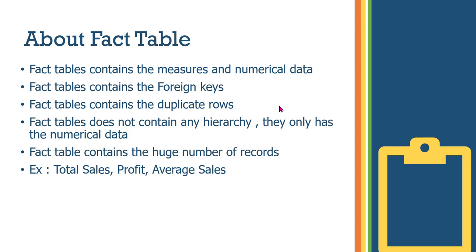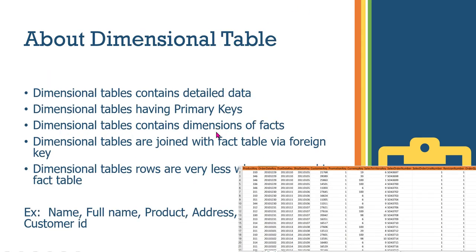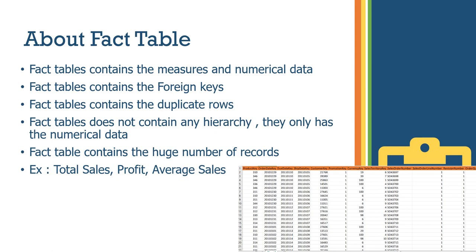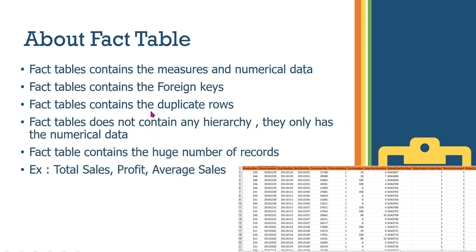Fact tables contain measures and numerical data. Dimension tables hold the detail data, while fact tables hold the measures and numerical data — the numbers are at maximum. Fact tables contain foreign keys, whereas dimension tables have primary keys. Fact tables also contain duplicate rows.